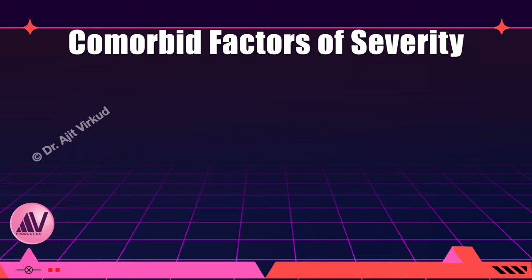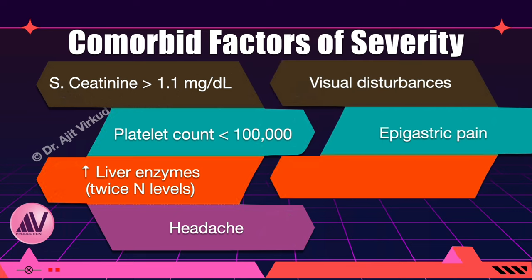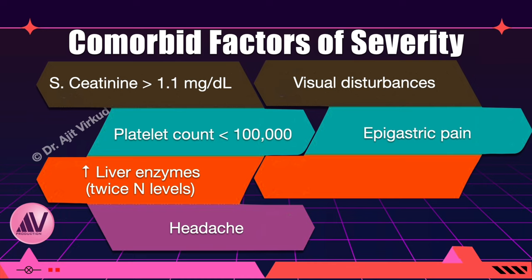Once significant proteinuria is demonstrated, there is no need to repeat it. An important investigation for severity, especially renal damage, is serum creatinine. A value greater than 1.1 mg/dL, or its doubling from baseline, indicates renal insufficiency. Note that normal serum creatinine in pregnant women is 0.4 to 0.5 mg/dL — half of the non-pregnant normal. Other indicators of severity include platelet count less than 100,000 per cubic millimeter, liver enzymes elevated to twice the normal level, headache, visual disturbances, epigastric pain, and pulmonary edema — a new addition to the list of ominous signs.